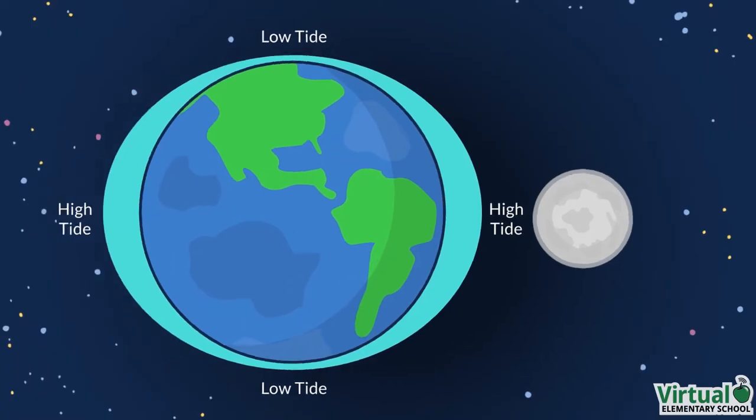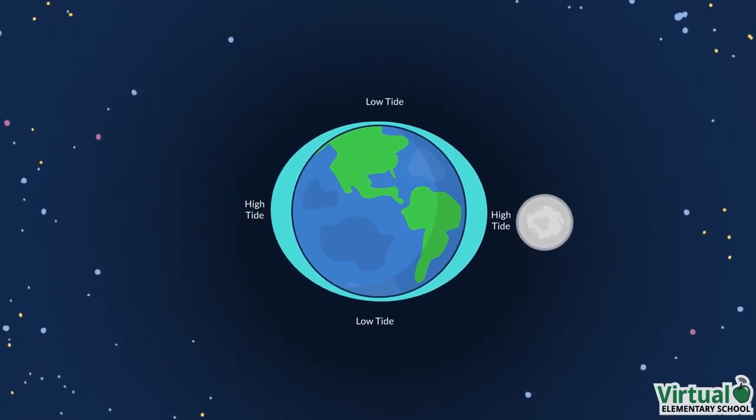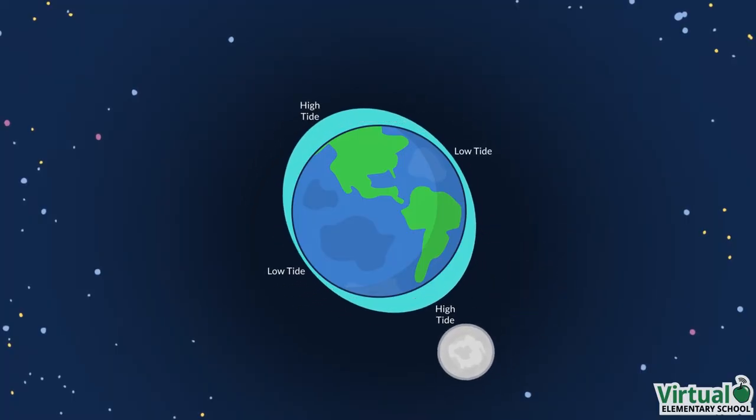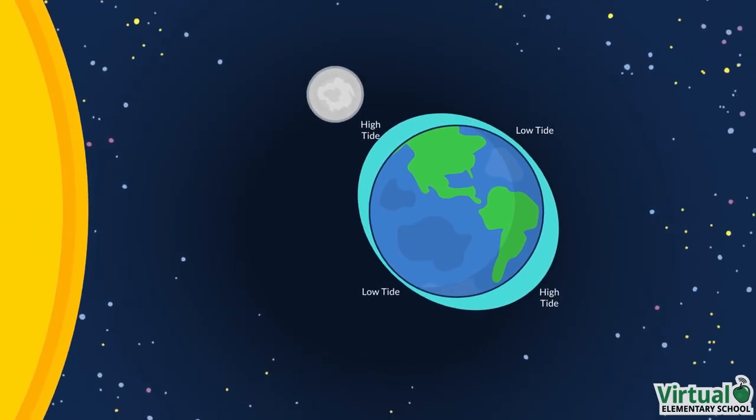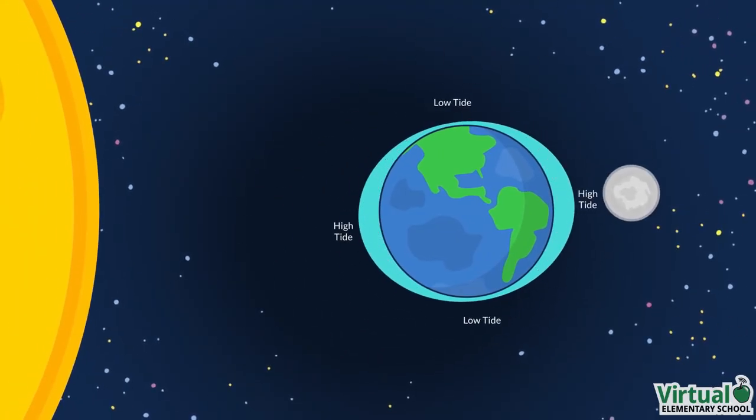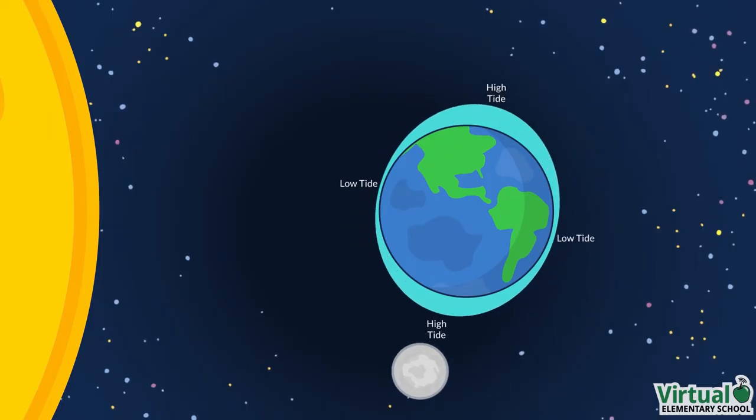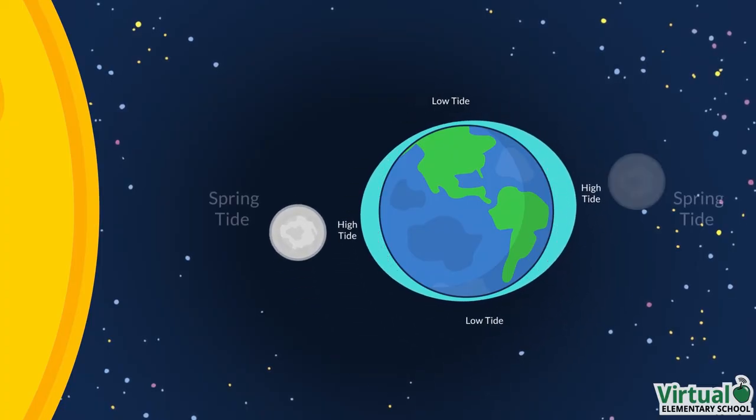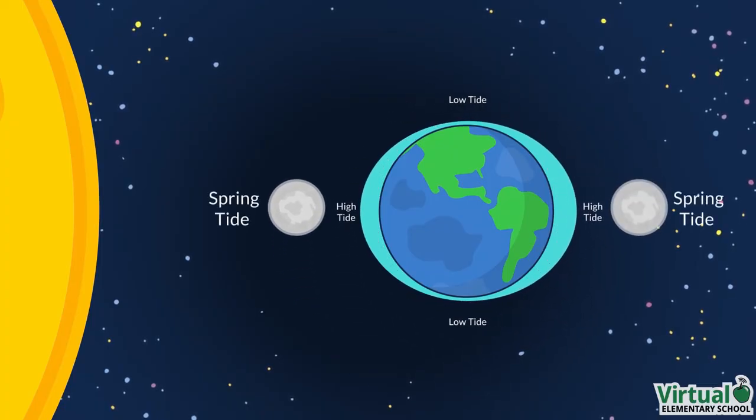The tide cycle: As the Moon rotates around the Earth and as the position of the Sun changes, Earth also has spring and neap tides. Spring tide occurs when the Sun and the Moon are aligned.